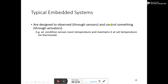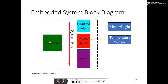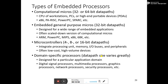Embedded systems are designed to observe through sensors and control something through actuators — for example, air conditioning sensors monitor room temperature and maintain it via thermostats. The embedded system blocks include control outputs, observed inputs, and memory — motors, lights, and temperature sensors. Types of embedded processors include 32-bit and 64-bit computation microprocessors, 4 to 16-bit microcontrollers, and domain-specific processors designed for a particular purpose.